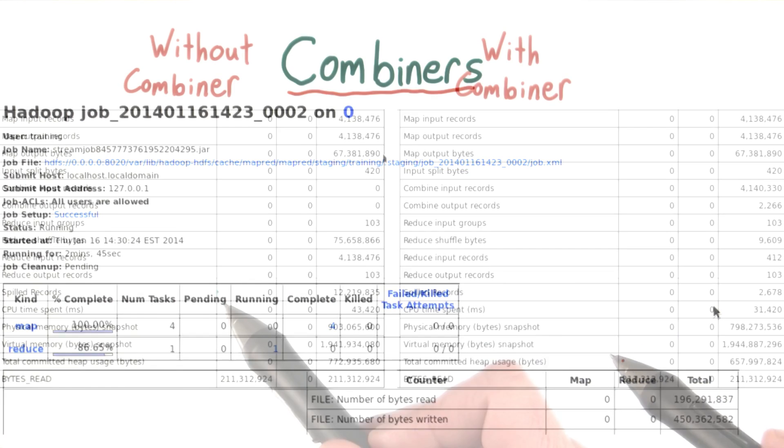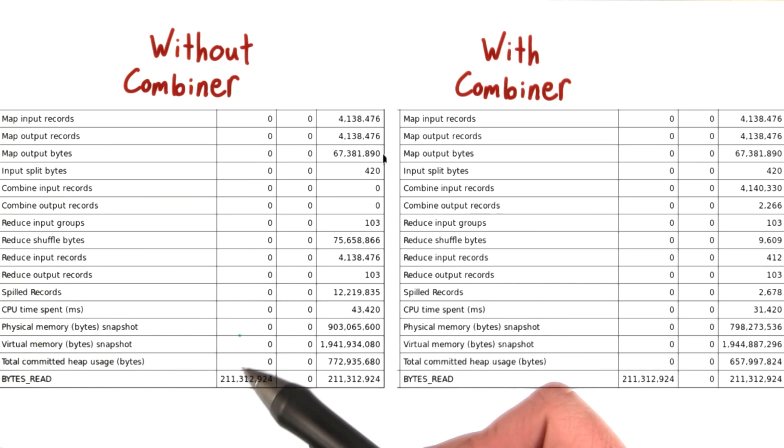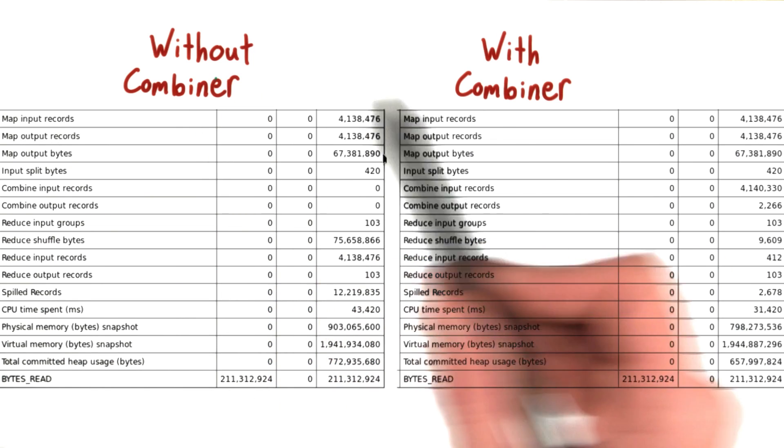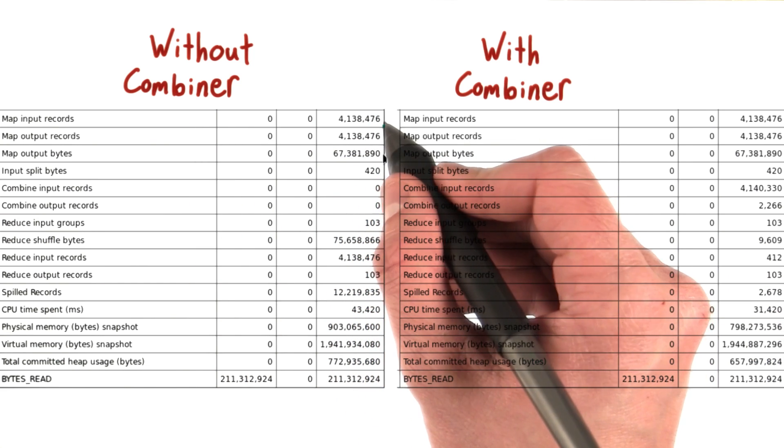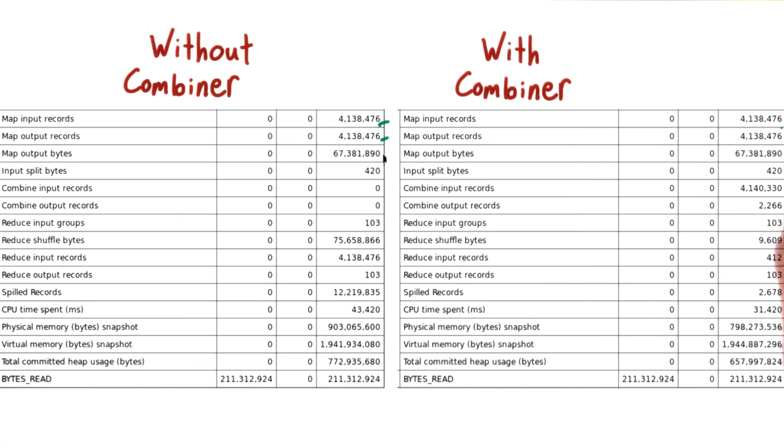So let's compare what happened on these job pages, the one without the combiner versus the one with the combiner. So a lot of stuff is the same. The mappers do the same amount. The input matches the output for without and with. That's as expected. In fact, a lot of things look pretty similar.